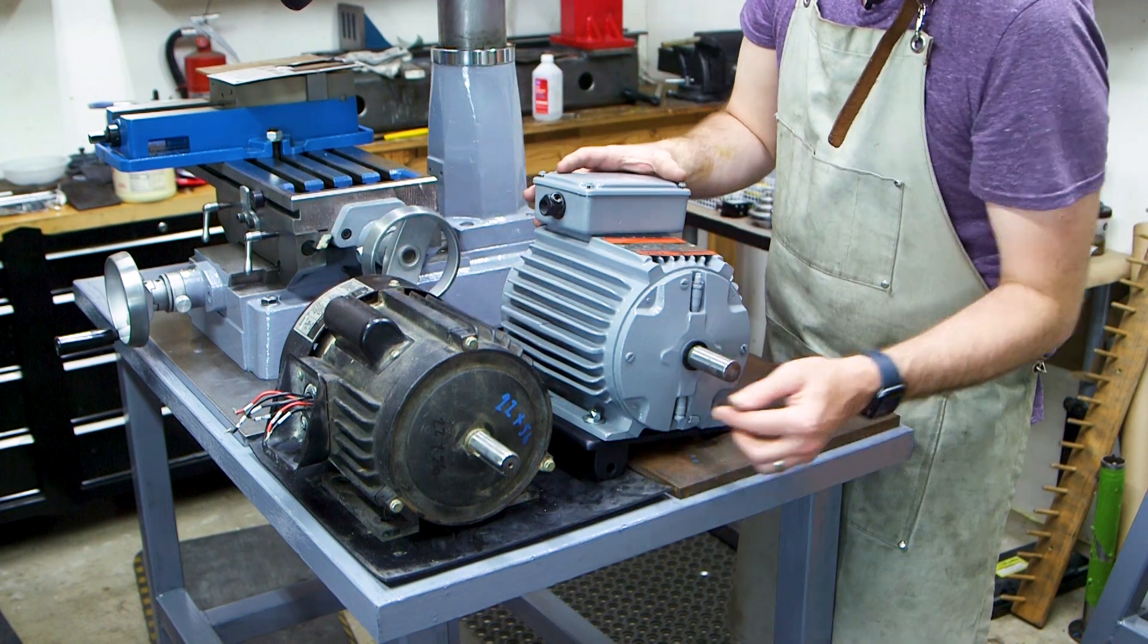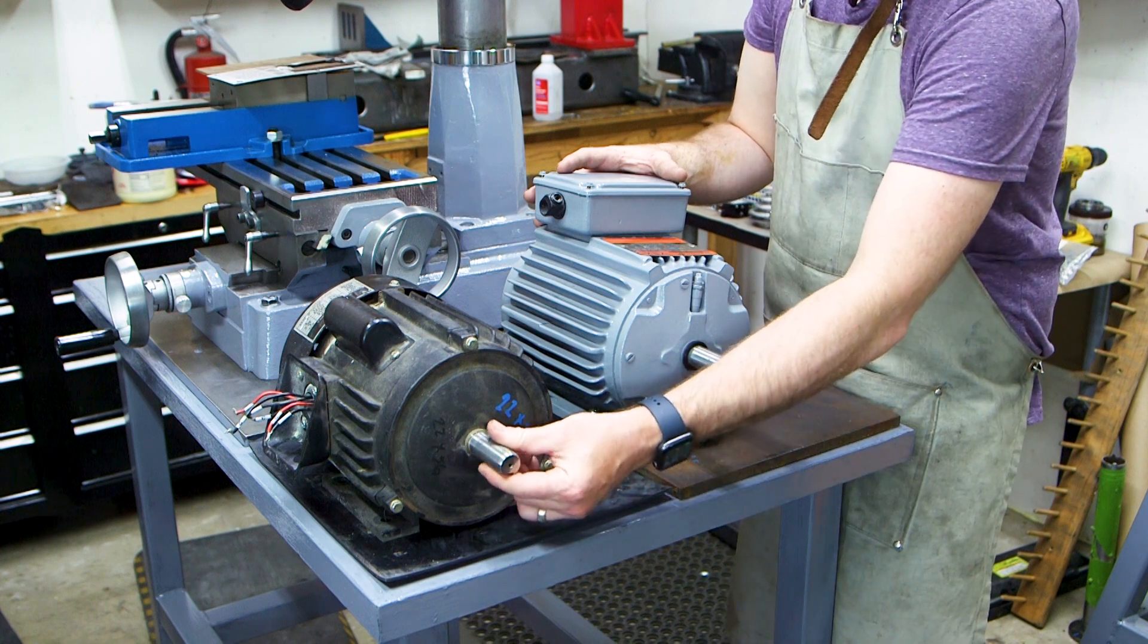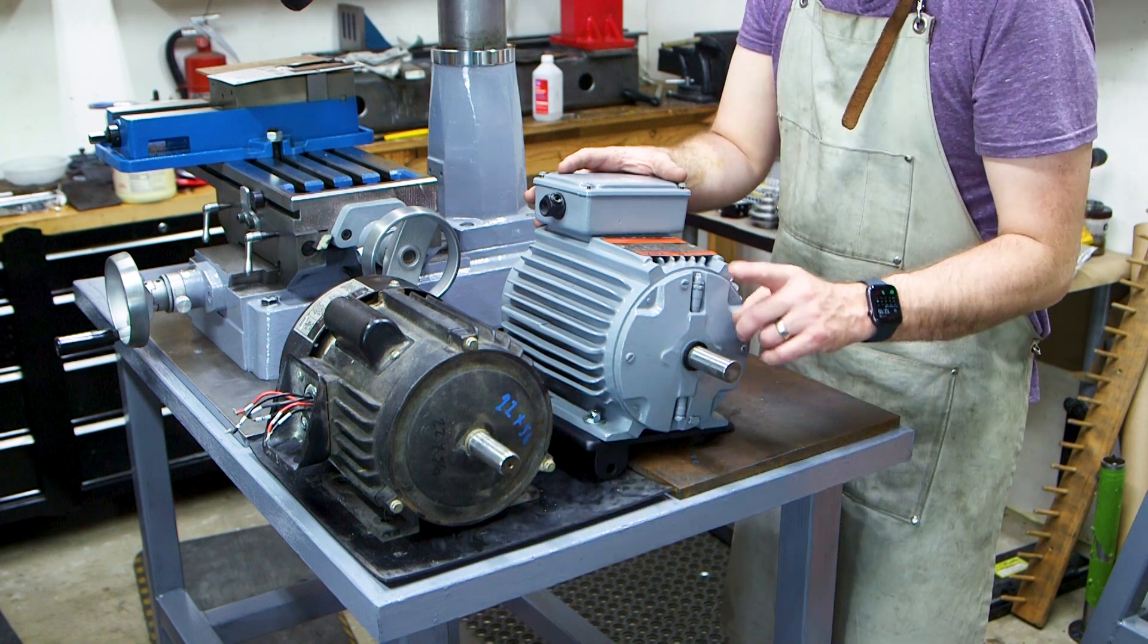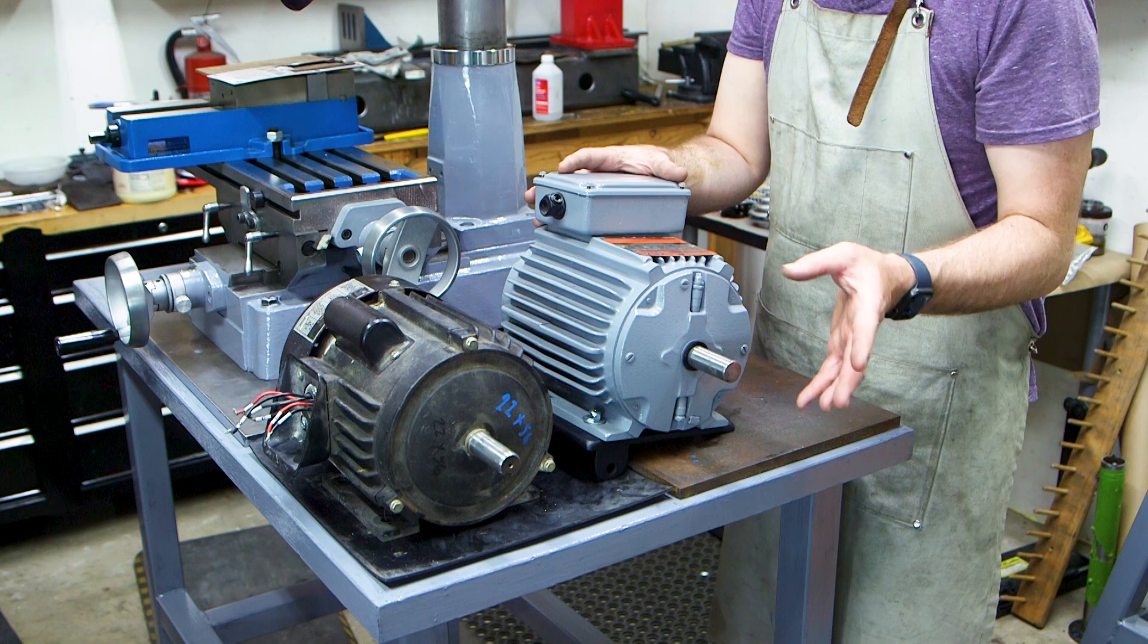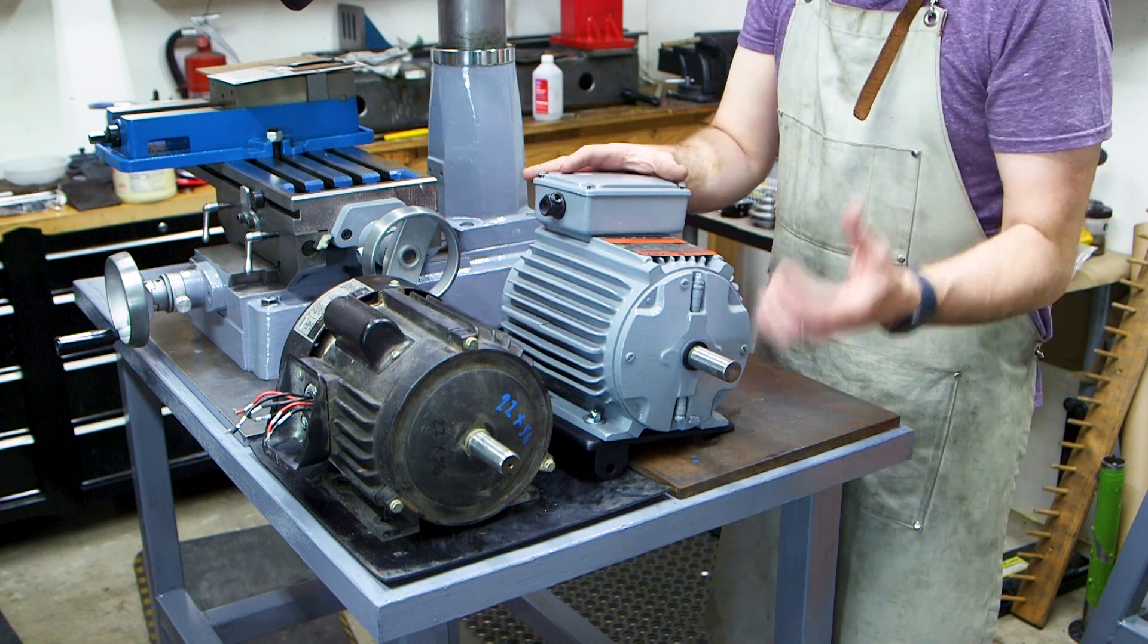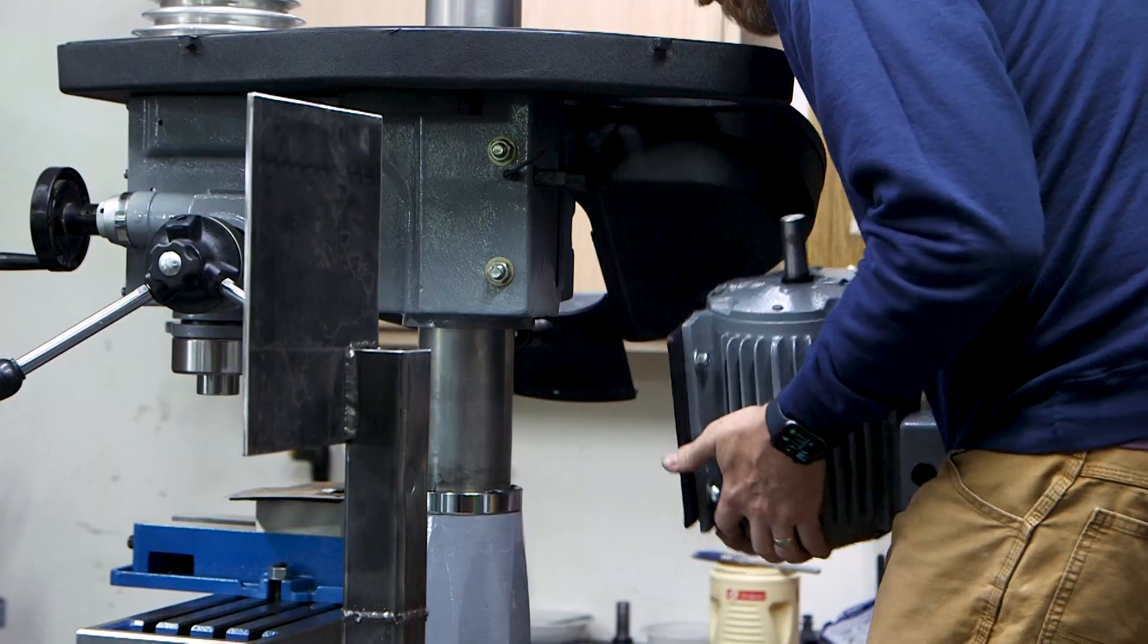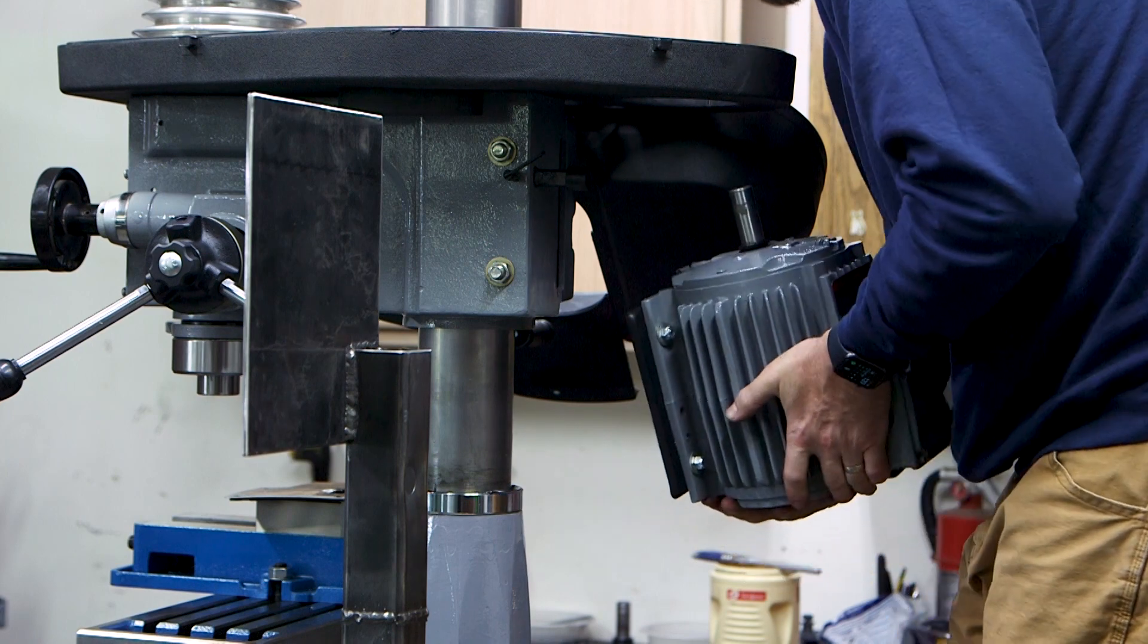And the output shaft on the original motor is 22 millimeters. And on the new motor, it's seven eighths or about 22 and a quarter millimeters. So to use the pulley, I'm going to have to bore that out. Seriously heavy. Holy crap.